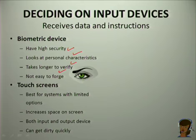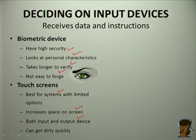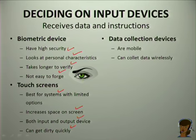Another advanced input device is a touchscreen. Touchscreens are best for systems with limited options. They increase space on the screen and can act both as an input and output device. However, the problem is they can get dirty very quickly. Another device is your data collection device — mostly these are mobile and can collect data wirelessly.